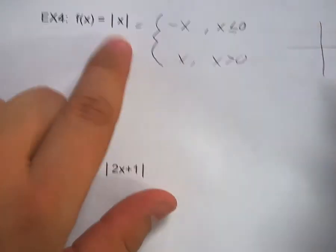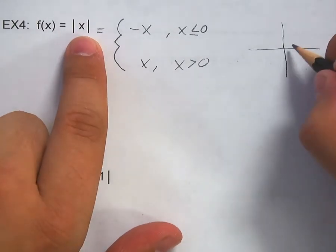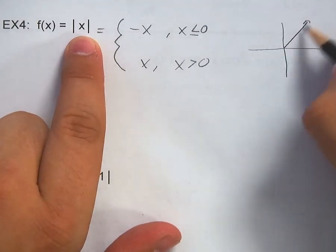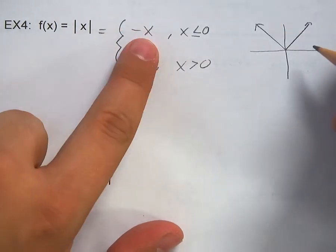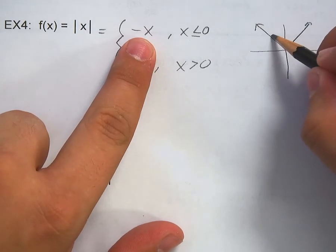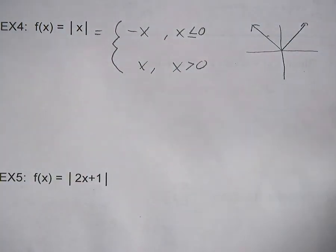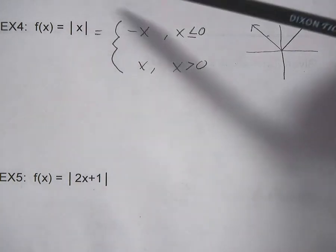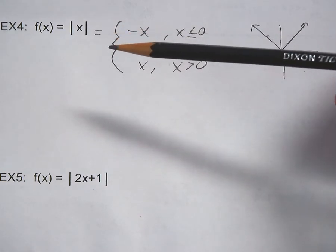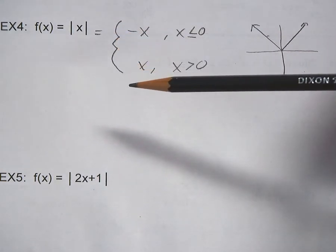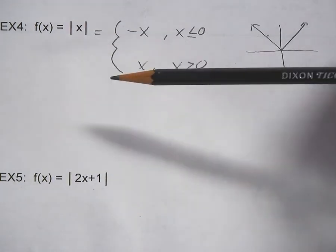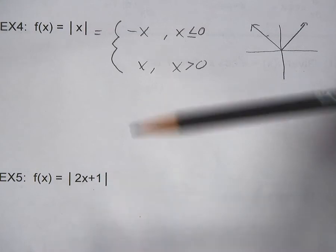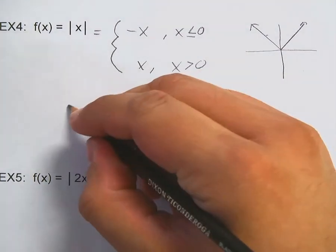The absolute value of x tells you the slope is one, so it's going to be one over one on the right side. Once you hit the x-axis it bounces back up, and it's negative x to the left of zero. The easiest way to find the division point is to set the inside equal to zero and solve — that tells you where the division happens.